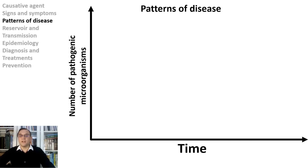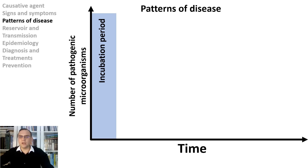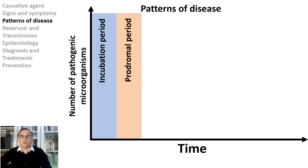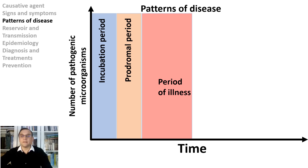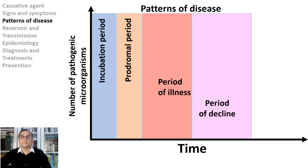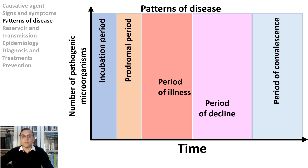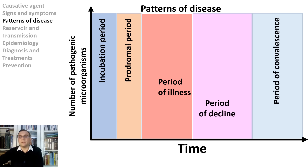Now we will examine the patterns of the disease — the stages or periods of the disease. Infection typically occurs in five stages: incubation period, prodromal period, period of illness, period of decline, and period of convalescence. An incubation period is the time between when a person is exposed to an infectious agent and when the person begins to develop symptoms — the pathogen starts to multiply and increase in number. The prodromal period is when you start to have mild, non-specific signs and symptoms, such as feeling a bit more tired than usual and slightly feverish.